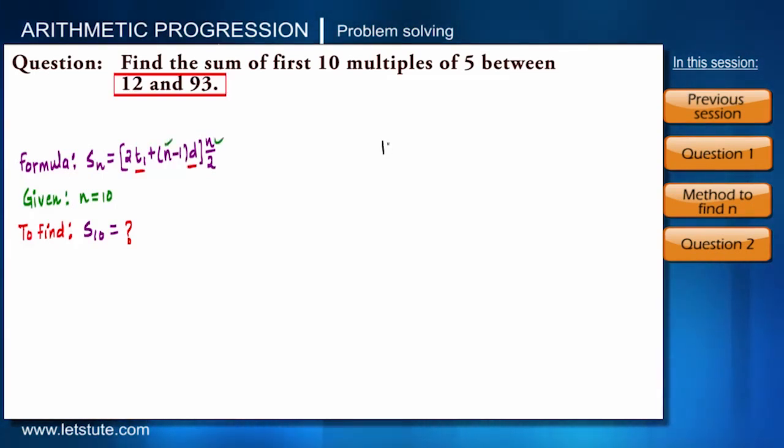List the numbers: 12, 13, 14, 15 to 90, 91, 92, 93. T1 is not 12, T1 is 15. First multiple of 5 in the range is 15. So we got T1 also.